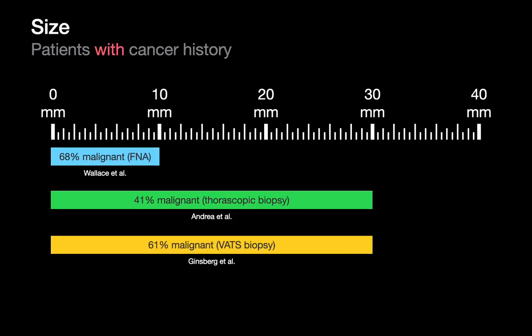The data for the previous slides were all in patients without a history of cancer. This slide looks at the incidence of cancer in nodules of different sizes in patients with a cancer history. Wallace looked at nodules in the zero to ten millimeter category. Whereas those numbers were very, very low in patients without cancer history, in patients with a cancer history the rates are substantially higher. The TLDR: the risk of malignancy skyrockets even for subcentimeter lung nodules in patients who have a known malignancy.